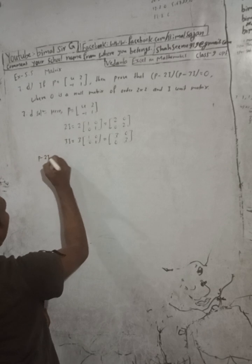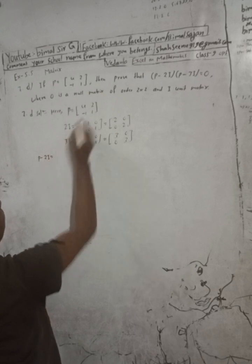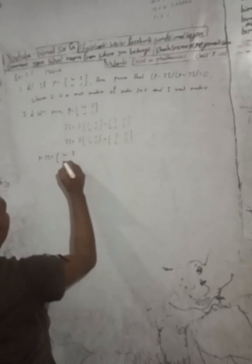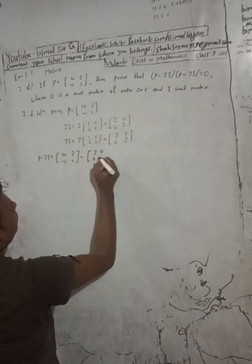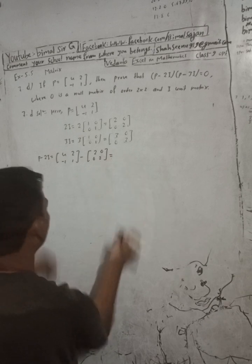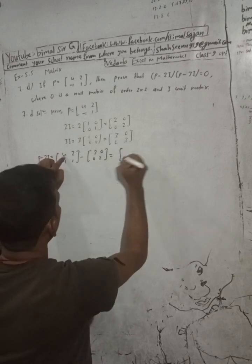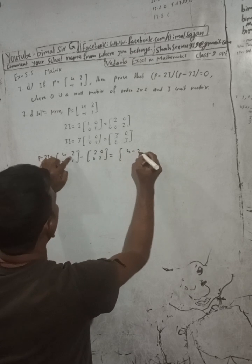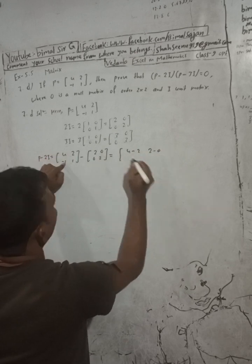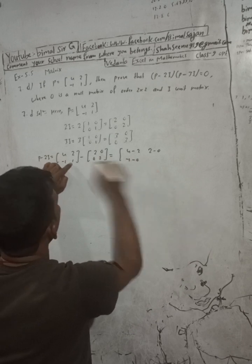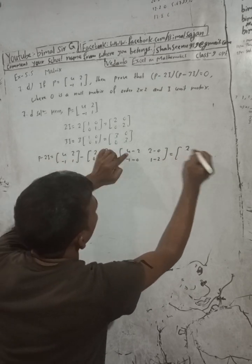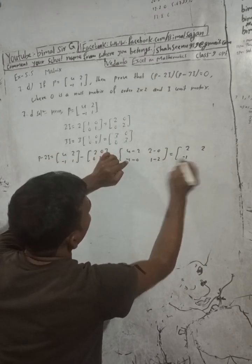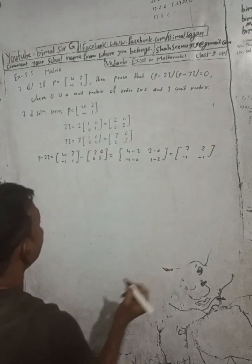P minus 2I is equal to [4 2; -1 1] minus [2 0; 0 2], which equals [4-2, 2-0; -1-0, 1-2]. This gives us [2, 2; -1, -1].